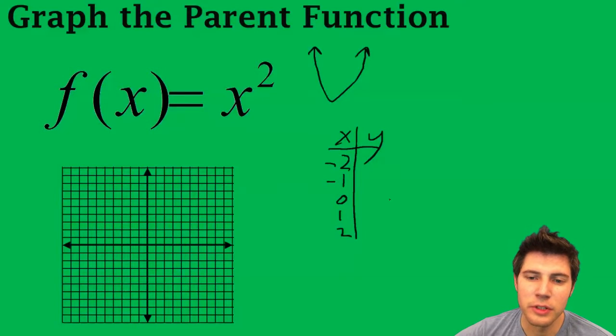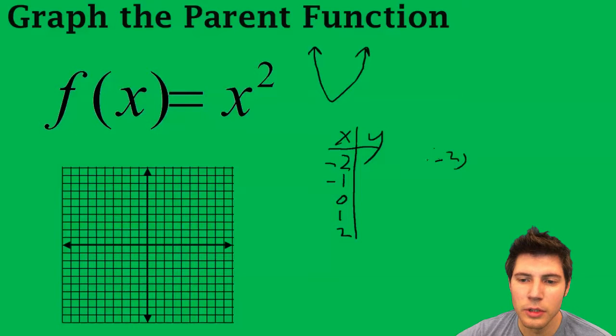And that's if you graph these points. If we plug in negative 2, so negative 2 squared is equal to 4. So it's negative 2, 4. Negative 1, if we plug that in, we get a 1.